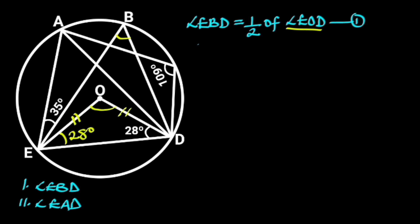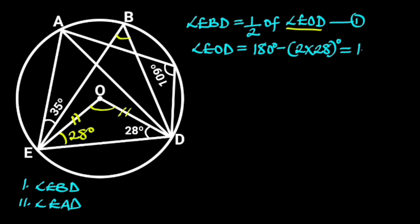So that angle EOD will be 180 degrees minus 2 times 28, which is 124 degrees. Reason: the sum of angles in a triangle is 180 degrees.